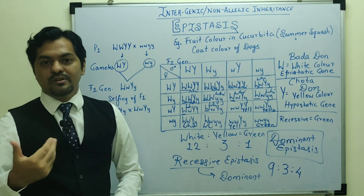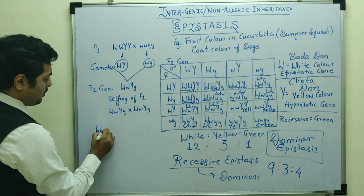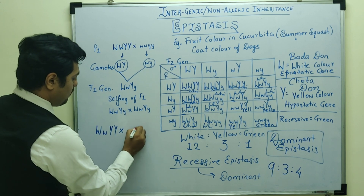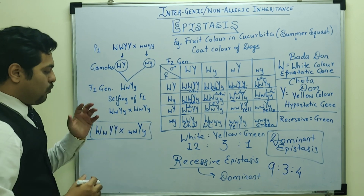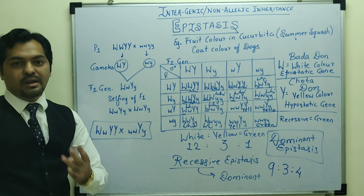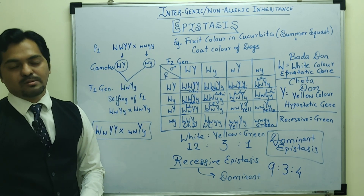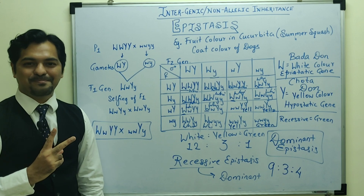Just as I gave assignments for complementary and supplementary genes, here is one: if we cross capital W, small W, capital Y capital Y with small W small W, capital Y small Y — what ratio will come from these parents? Mention it in the comment section. With this we have completed 3 major concepts of intergenic inheritance. In my next video we are going to discuss duplicate genes and collaborator genes. Stay tuned. That's all from Dipenism. Thank you.